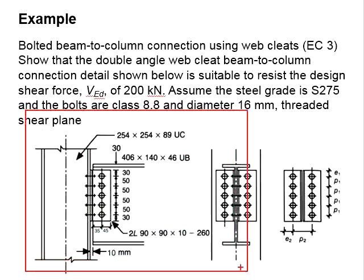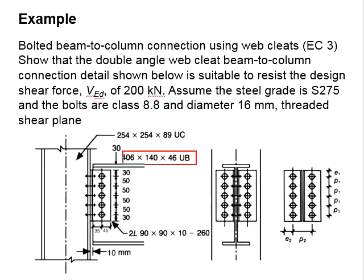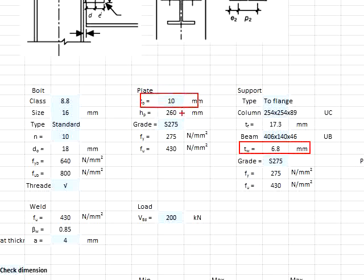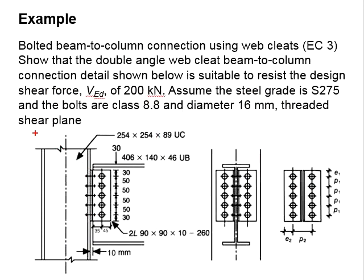Referring to the question, the thickness of the angle plate is 10 mm, and based on the beam size given we are able to determine the thickness of the web, which is 6.8 mm. Since the thickness of the beam web is smaller than the thickness of the angle, we would expect the beam web to be more critical. Also, by referring to this table and based on the calculated shear force, we know that the most critical bolt will have a resultant shear force of horizontal and vertical component forces acting on it, and we know there will be two angle plates.